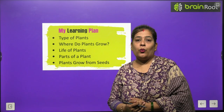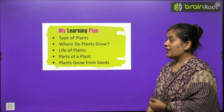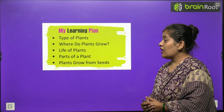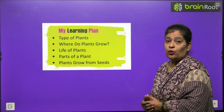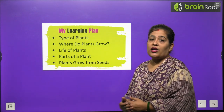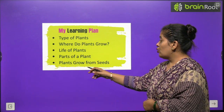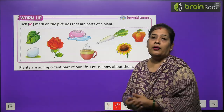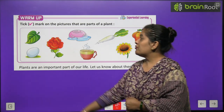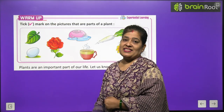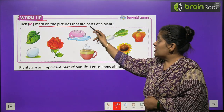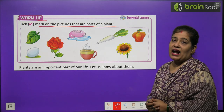In this chapter you will learn: types of plants, where do plants grow, life of plants, parts of plants, and we will learn how plants grow from seed. Before we start the chapter, first we will do a warm-up exercise — tick mark on the pictures that are parts of plants.